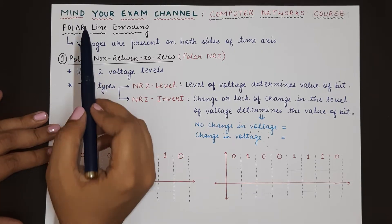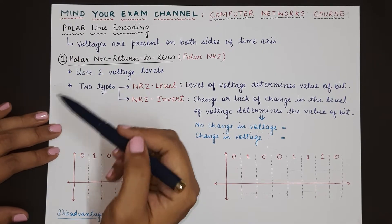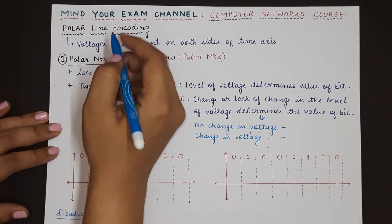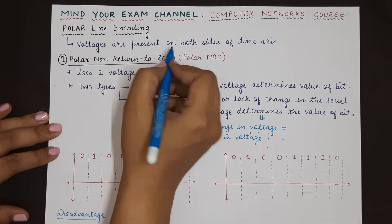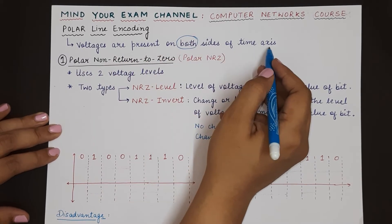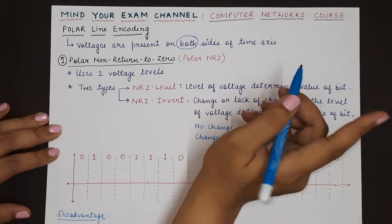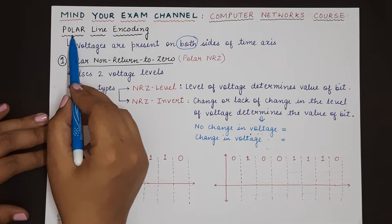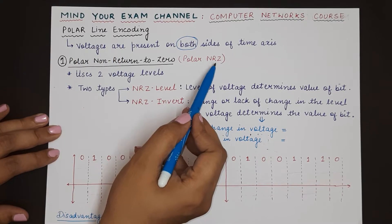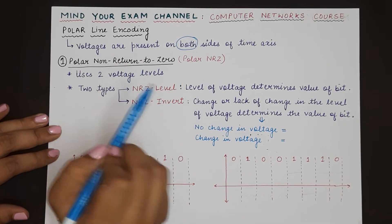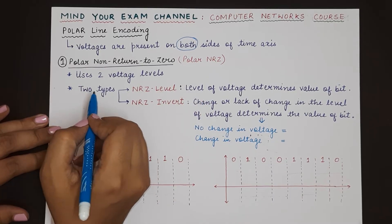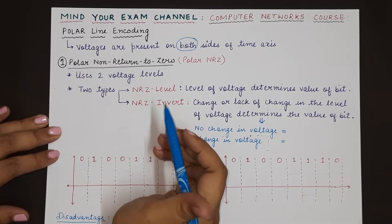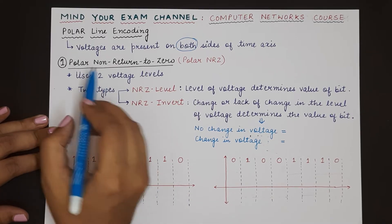Unipolar meant that the voltage levels are present only on one side of the time axis, whereas in polar line coding voltages are present on both sides of the time axis. So this is one difference you need to remember. The first type of polar line coding is polar NRZ — non-return to zero — meaning the signal will not return to zero voltage in the middle of the bit, as we have seen in the previous video. And it is polar.